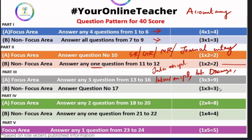If you have questions about the Reconstitution of Partnership, you will need the average profit method, super profit method, and valuation method. Then you will need the new ratio or sacrificing ratio, and the effect on goodwill.